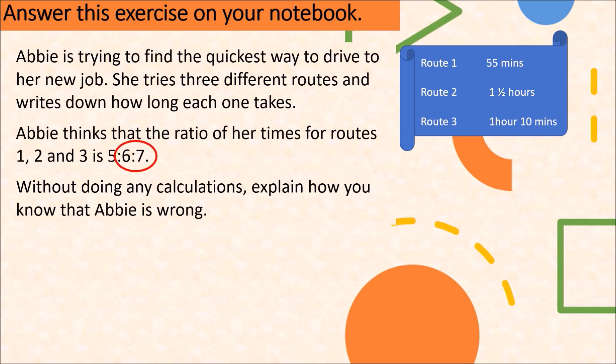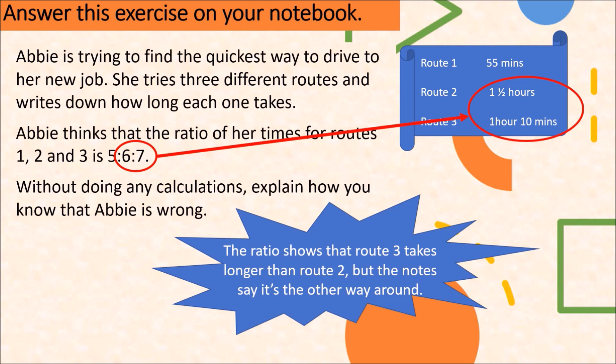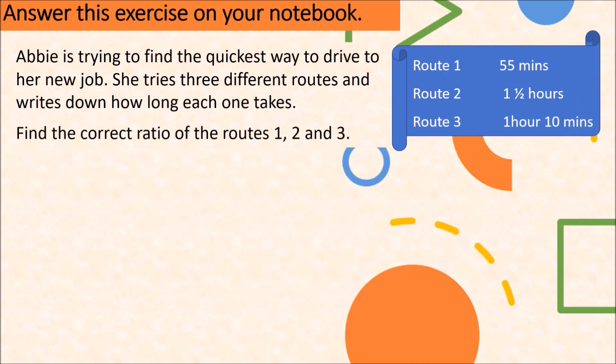Yes, just look at the last two terms of Abbie's ratio: 6 is to 7. This is the ratio of the 2nd to 3rd routes. 6 is to 7 is telling us that it takes longer for Route 3 than Route 2. But let's take a look at her notes. Route 2 takes 1 and a half hour, while Route 3 takes 1 hour and 10 minutes. Route 2 is basically 1 hour and 30 minutes, and that is longer than 1 hour and 10 minutes. So we see that the ratio of Abbie shows that Route 3 takes longer than Route 2, but her notes say the other way around.